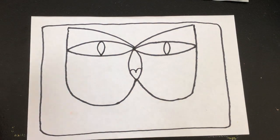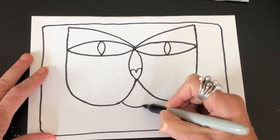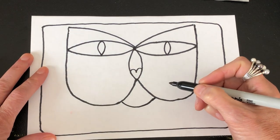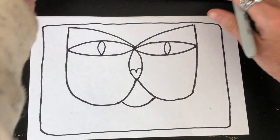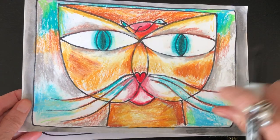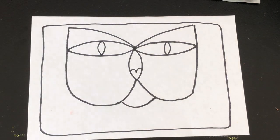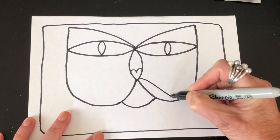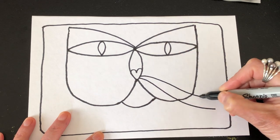We need whiskers and the neck. The whiskers on Paul Klee's - I was noticing on his, his whiskers curve like that. You can make them straight, you can make them curved, however you would like. But I noticed they were coming out of the heart, so I'm gonna put three on that side. You can do it however you would like, and three on that side.